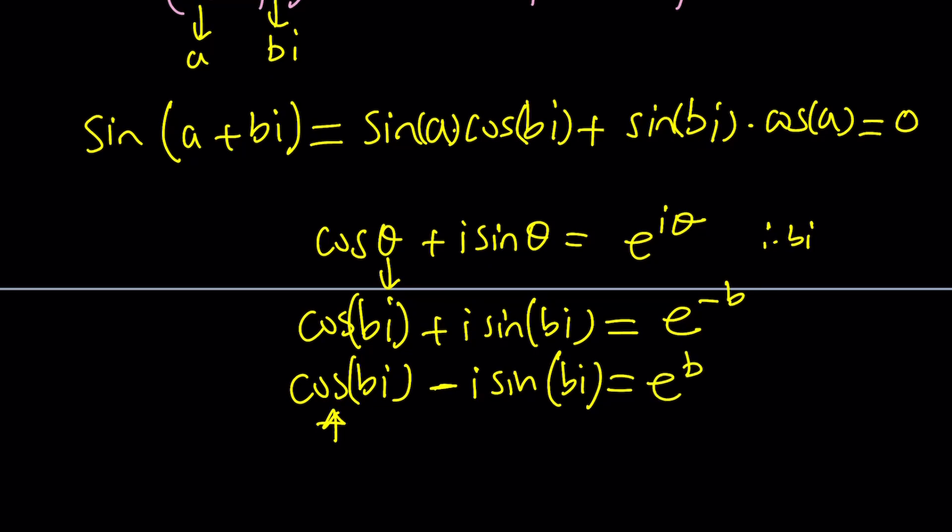And then by adding this and dividing by 2 you can get cosine of bi from here. They'll cancel out, and then you can get a value for that. You can plug it in here, and then something for sine bi you can find similarly. Plug it in there and see what you can find from there. But this is kind of complicated. Let's keep it simple.